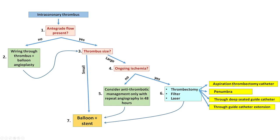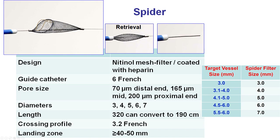If thrombectomy is used, there are four options. One is to use one of the various aspiration thrombectomy catheters. The second is to use the Penumbra, which is essentially an aspiration catheter with a pump providing stronger and more consistent suction. The third is to aspirate through the guide catheter that is deeply intubated, or through a guide catheter extension. The use of filters for thrombus does not have a guideline indication because early studies in STEMI did not show a consistent benefit; however, for selected cases of large thrombus, it might be useful.